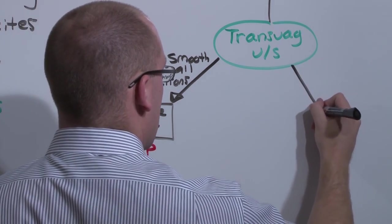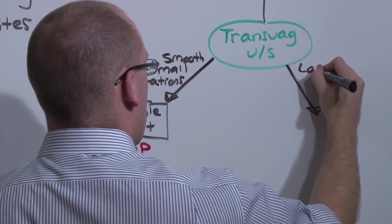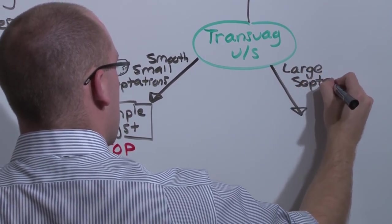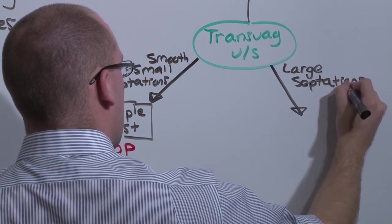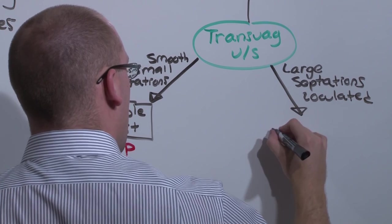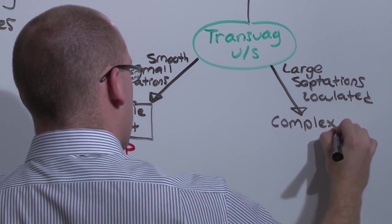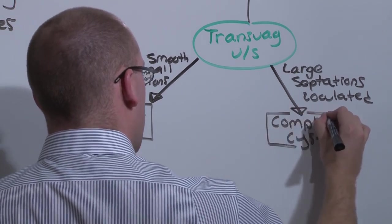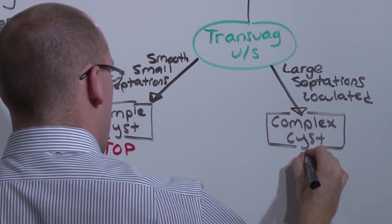On the other hand, if you have a large cyst that's not smooth, it's full of septations, and the fluid is loculated, now you have a complex cyst. Biopsy is going to be the best way to diagnose it as an actual cancer.